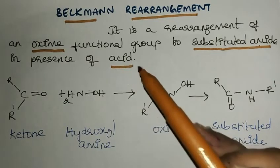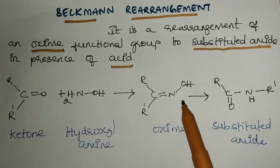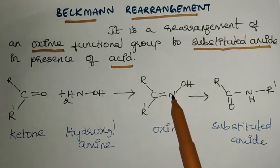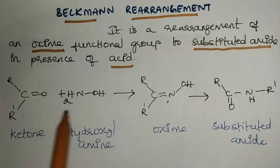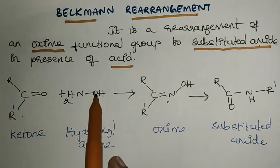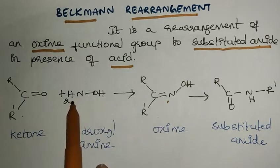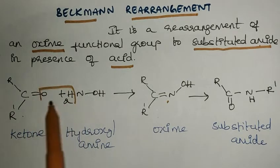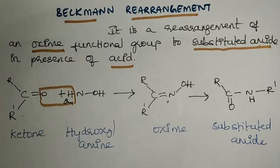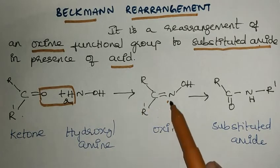So what is an oxime? An oxime contains a C double bond N-OH group. How is it prepared? It is prepared from a ketone. When a ketone is treated with hydroxylamine — hydroxylamine having a hydroxyl group attached to the amine — it will undergo dehydration to give an oxime.